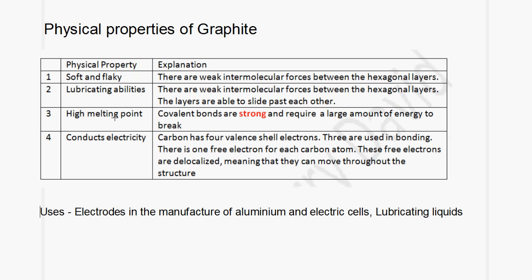The third physical property: graphite has a high melting point. Covalent bonds are strong and require a large amount of energy to break. Some students get confused with this — covalent bonds are strong bonds and they do require a large amount of energy to break. The fourth physical property: graphite conducts electricity. Carbon has four valence shell electrons and three of them are used in bonding. Therefore you have one free electron for each carbon atom, and these free electrons are delocalized, meaning that they can move throughout the structure.